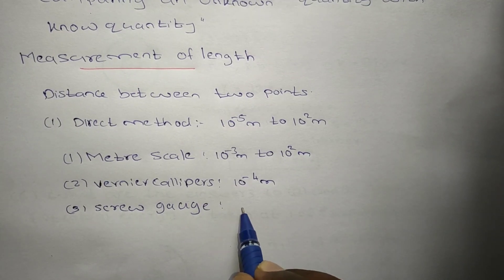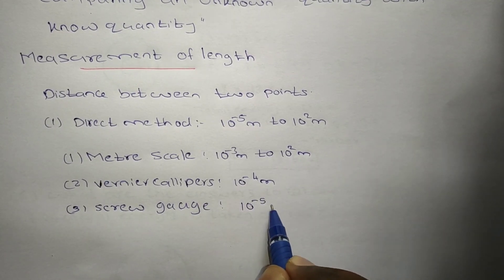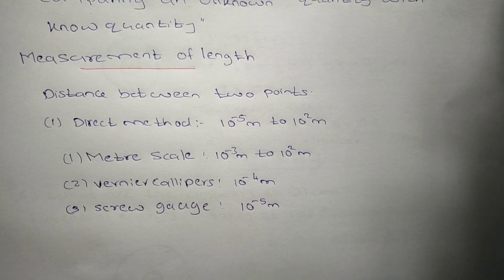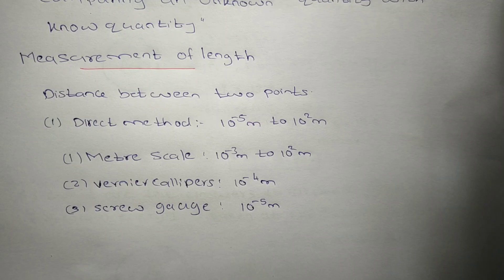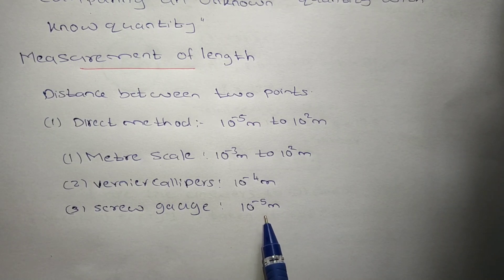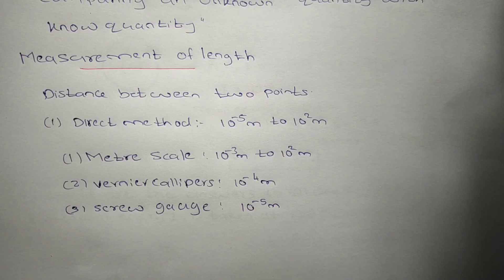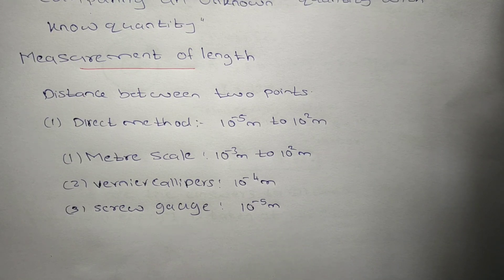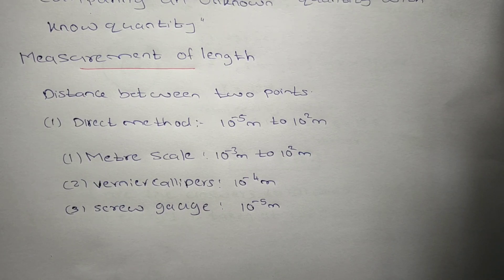Another device is the screw gauge. Its least count is 10 to the power minus 5 meters, that is 0.01 millimeter. The screw gauge can measure lengths from 10 to the power minus 5 meters up to 50 millimeters. Similarly, another device is the spherometer. This covers the direct method.